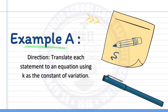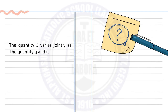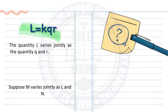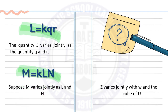We have three sets of examples for each type of variation. For Example A, we translate each statement to an equation using k as the constant of variation. One: the quantity L varies jointly as q and r, giving L equals kqr. Two: m varies jointly as l and n, giving m equals kln. Three: z varies jointly with w and the cube of u, giving z equals kw u³.